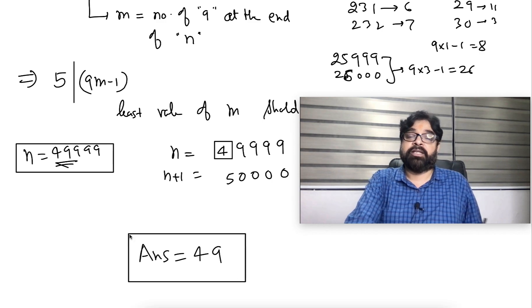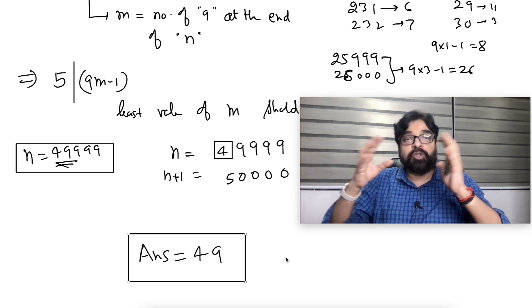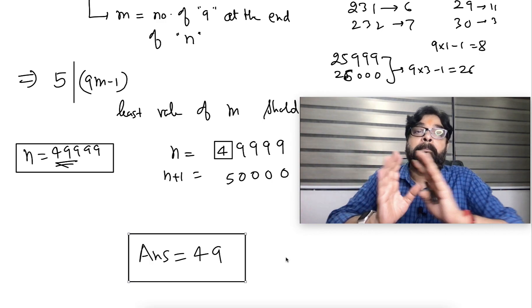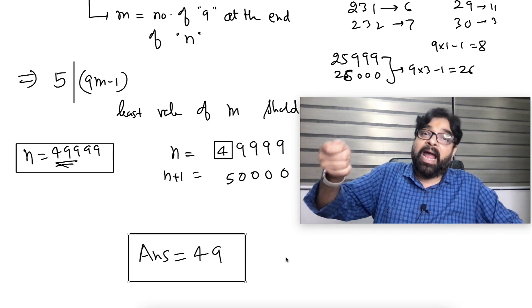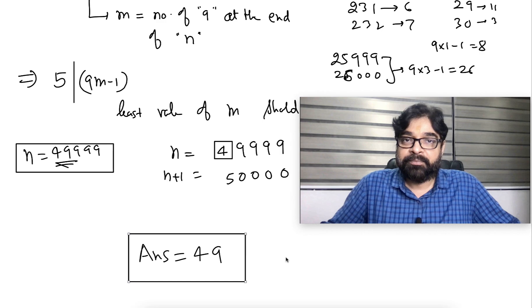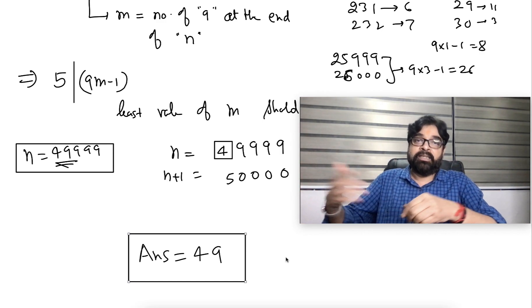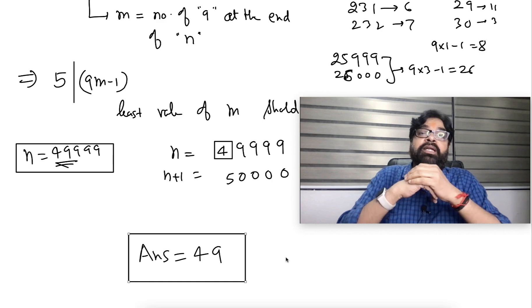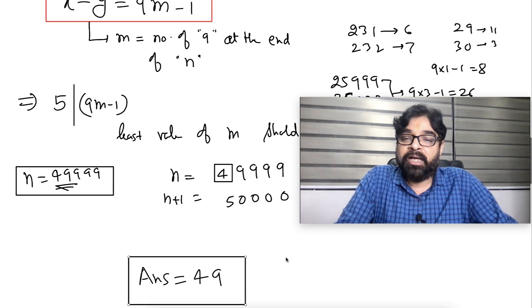Something we learn from this point. Sum of digits, difference of sum of digits of two consecutive numbers is 9m minus 1. What is m? m is the number of 9 at the end of n. Don't say that number of 9 involving the number. Number of, at the end, how many 9s are there? So this is one of the very beautiful questions. I like this one.